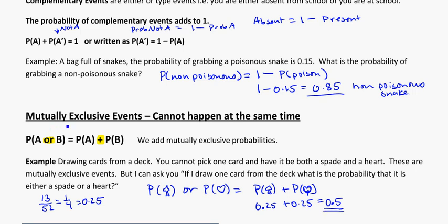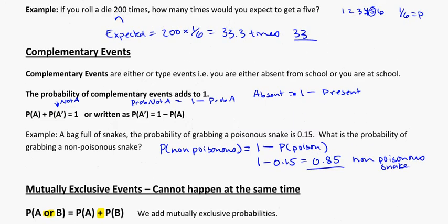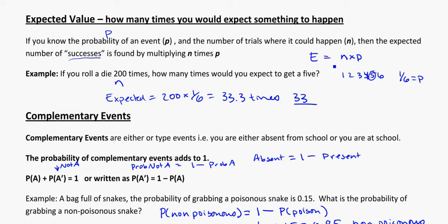So for mutually exclusive events, again, remember you're going to be adding them together. For complementary events, it's just one minus to figure out the other half of the complementary problem. And for expected values, it's going to be the number of trials times the probability.